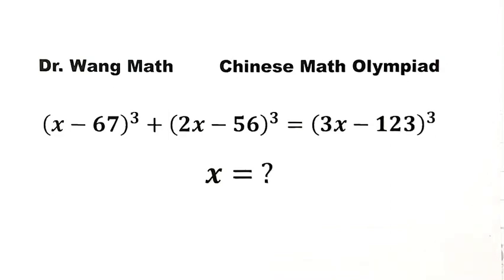In this video, we are going to tackle an equation from the Chinese Math Olympiad. Our equation is the quantity x minus 67 cubed plus the quantity 2x minus 56 cubed equals the quantity 3x minus 123 cubed.